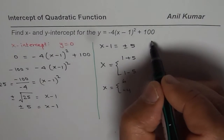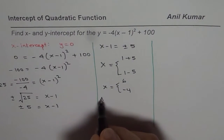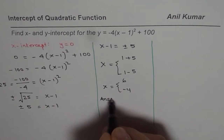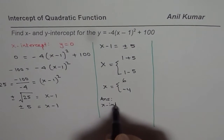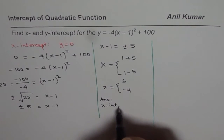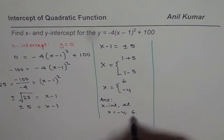So that is how you find x-intercepts. Let me write down the answer: x-intercept at x equals minus 4 and 6.